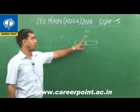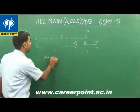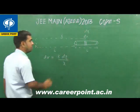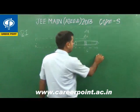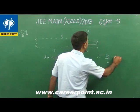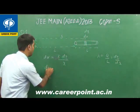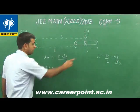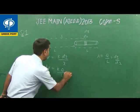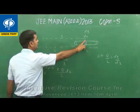The potential due to this element at the point is dV = k·dq / x. Replacing dq using lambda equals total charge upon total length, so dq = (Q/L)·dx. Therefore dV = k·(Q/L)·dx.